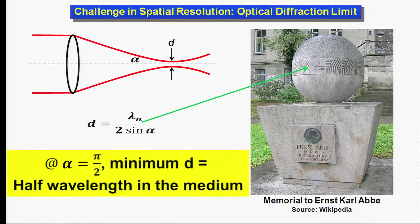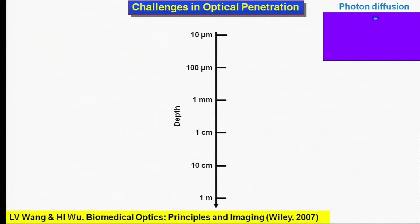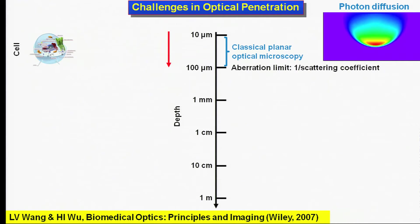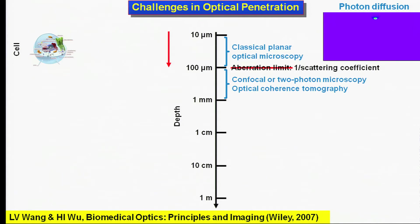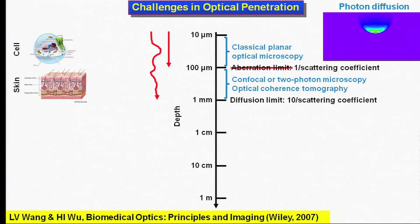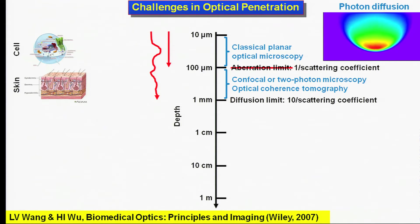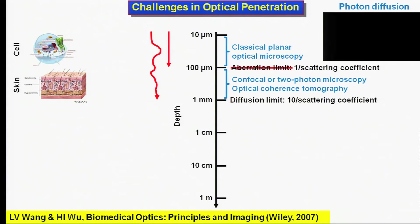However, in optical microscopy, resolution hits the wall. Diffraction limits the focal diameter to half of the wavelength. Optical penetration presents even more challenges. Wavefront aberration limits classical microscopy to tens of microns of penetration. Modern optical microscopy has beaten its limit, but it's still limited by diffusion to one millimeter of penetration.